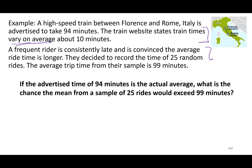Someone suspects that whenever they take this train they're a little late — they think on average it actually takes longer than the 94 minutes advertised. So they go ahead and take a random sample of 25 ride times between the two cities on this train system, and find that the average of those 25 train times was 99 minutes. What we're going to look at is: if the average train trip time really is 94 minutes as claimed, what is the probability that if I took a random sample of 25 rides, it would be 99 minutes or longer?